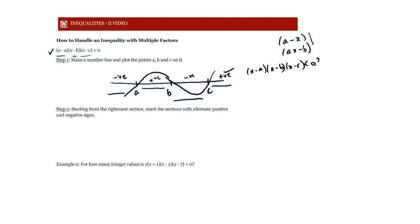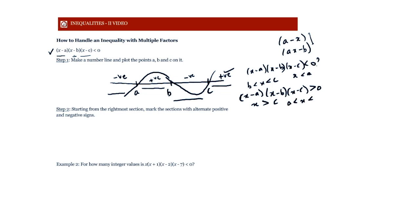For the product x minus a times x minus b times x minus c to be less than zero, x should lie between b and c, or x should be less than a. For the product to be greater than zero, x should be greater than c, or x should lie between a and b. The rightmost region is always positive and signs alternate at each transition point.